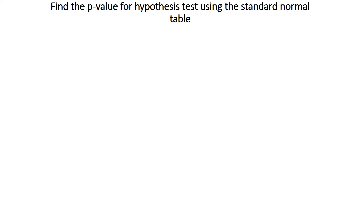We will find the B value for a hypothesis test using the standard normal table. One common problem we face when comparing hypotheses is the Z test — we perform a Z test but cannot find direct values from the Z table. When a Z value is calculated, we need to compare it to decide whether to accept or reject the hypothesis.